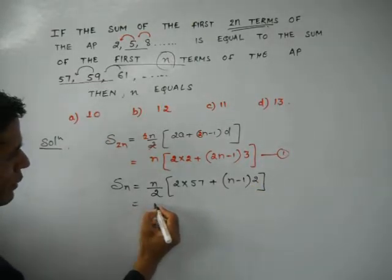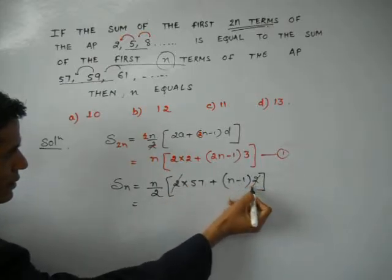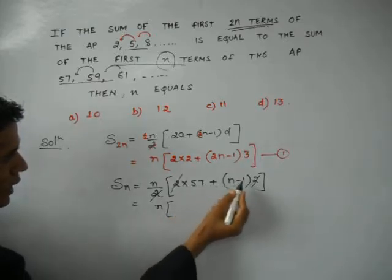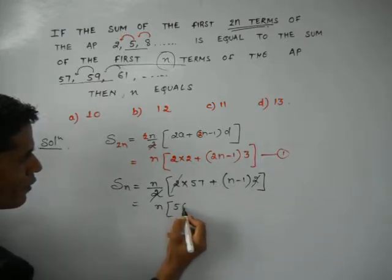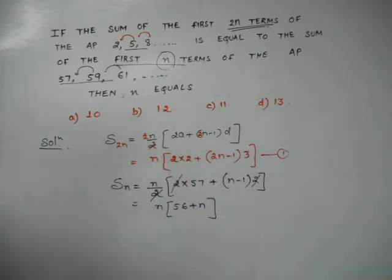So, this when simplified, if we take 2 common, we can cancel this and this along with this. So, this becomes n is outside. 57 minus 1 is 56 plus n. So, if this is equation 2,